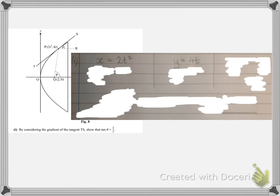In part 1, the first thing we need to do is to consider the gradient of the tangent TS. So the gradient of TS is just dy/dx evaluated at the point t, so it will be something in terms of t. This should be relatively straightforward to do because we were given what x is in terms of t and what y is in terms of t. So if we differentiate each of these with respect to t, we can combine our answers to get dy/dx.